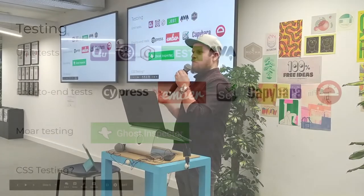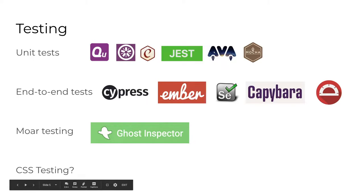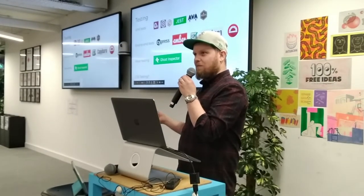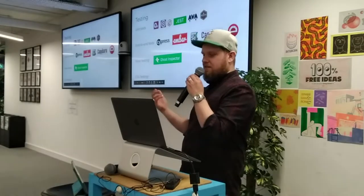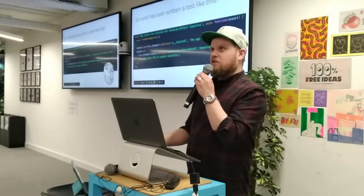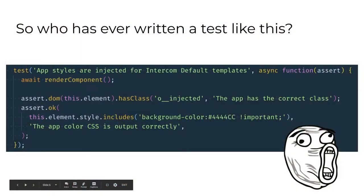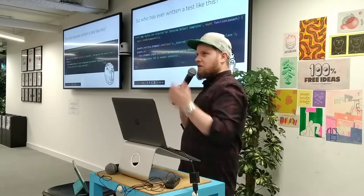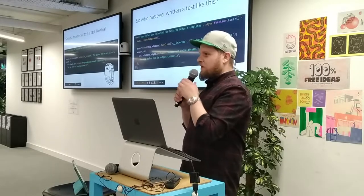But what about CSS testing? You're probably even thinking, why bother? Styles sometimes can make bad things happen. And when you want to test that — checking style attributes or checking classes — it's pretty horrendous. It doesn't scale well. You can't actually do this for every kind of possibility. So there must be a better way.